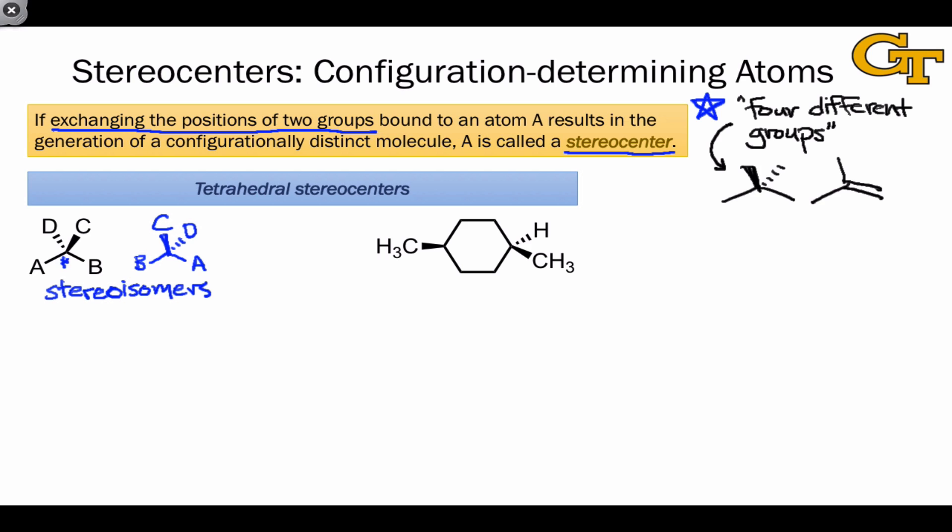The four different groups definition is not entirely rigorous, and here's an example where we have two stereocenters in this molecule actually, neither of which looks like it has four different groups attached to it. Let's focus on this atom on the right here. This carbon bears a CH3 group, a hydrogen,